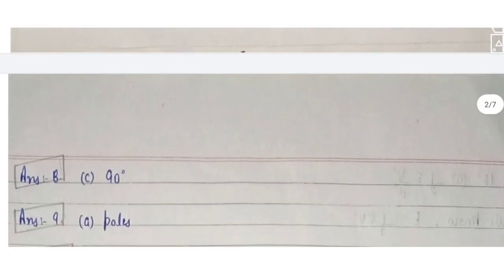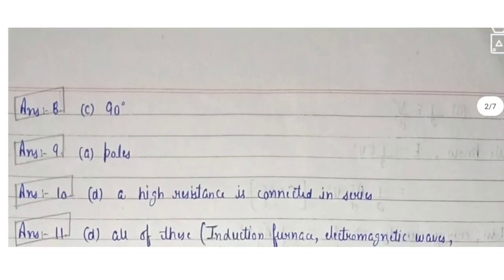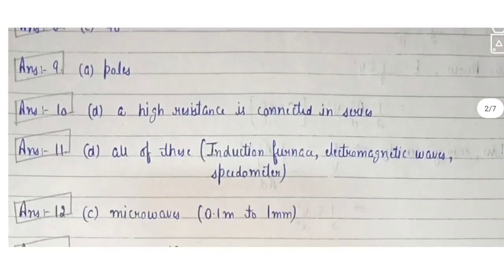Option A is the right answer. Next: what is the expected value of dip at the magnetic pole of the Earth? At the magnetic poles, the angle of dip is 90 degrees. Questions 8 and 9 are essentially the same — the angle of dip is 90 degrees at the magnetic poles.